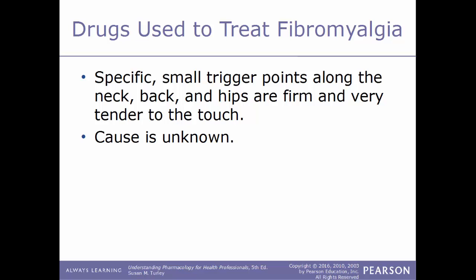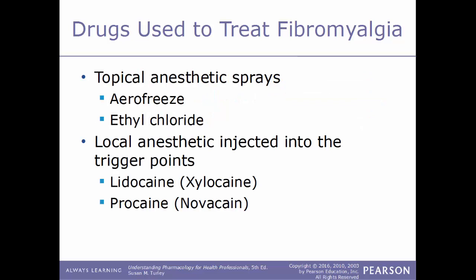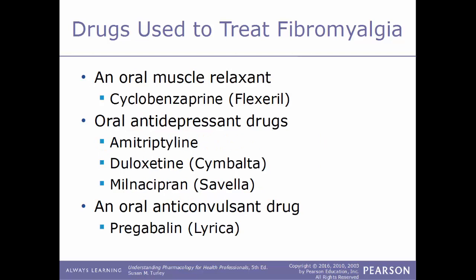Moving on to drugs used to treat fibromyalgia: the cause is unknown, and it is diagnosed by specific small trigger points throughout the body — including the neck, back, and hips — that are very tender to touch. Treatment options include a topical anesthetic spray such as Aero Freeze or ethyl chloride; local anesthetics injected into trigger points such as lidocaine (Xylocaine) and procaine (Novocaine); oral muscle relaxants such as cyclobenzaprine (Flexeril); oral antidepressants such as amitriptyline, duloxetine (Cymbalta), and milnacipran (Savella); and an oral anticonvulsant such as pregabalin (Lyrica).